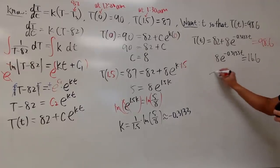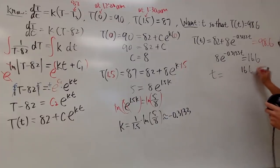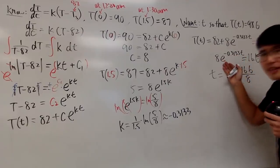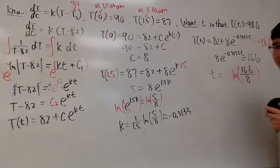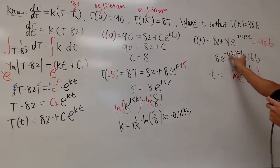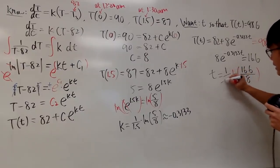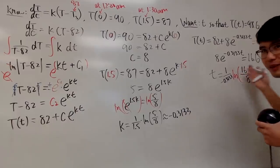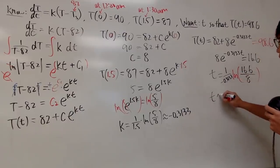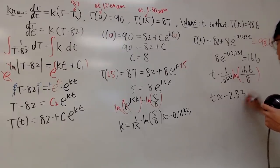To isolate t: divide both sides by 8, then take the natural log of both sides to get rid of the e, leaving -0.3133t = ln(16.6/8). Then divide both sides by -0.3133. Putting everything into a calculator, t is approximately negative 2.33.